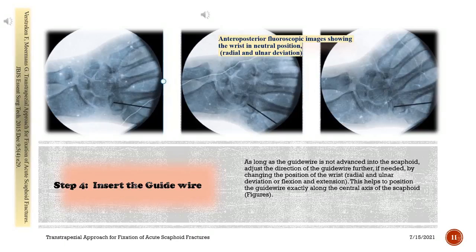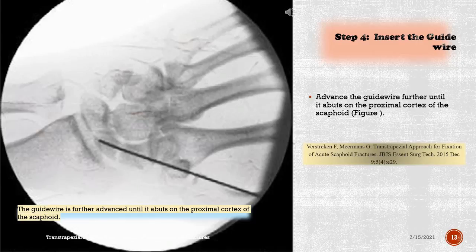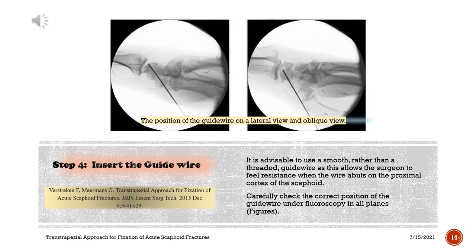Confirm guide wire position on antero-posterior fluoroscopic images showing the wrist in neutral position, radial and ulnar deviation, and on lateral fluoroscopic images showing flexion and extension. Advance the guide wire further until it abuts on the proximal cortex of the scaphoid. It is advisable to use a smooth rather than a threaded guide wire, as this allows the surgeon to feel resistance when the wire abuts on the proximal cortex. Carefully check the correct position of the guide wire under fluoroscopy in all planes, including the lateral view and the ulnar deviation view.